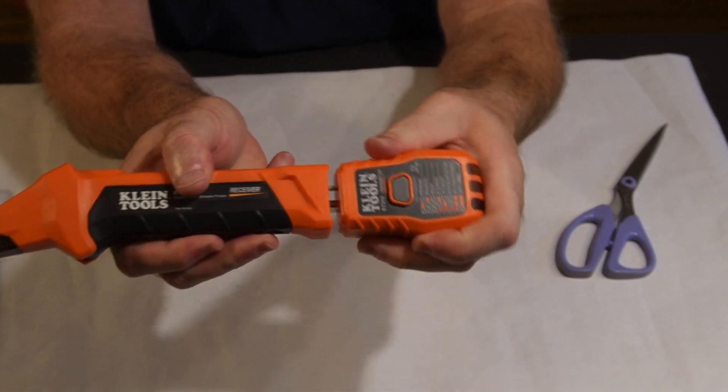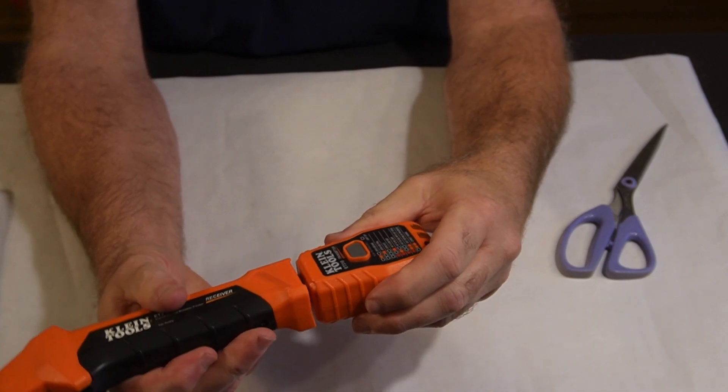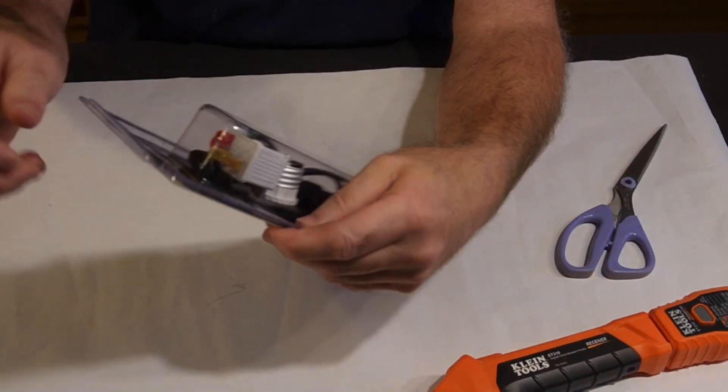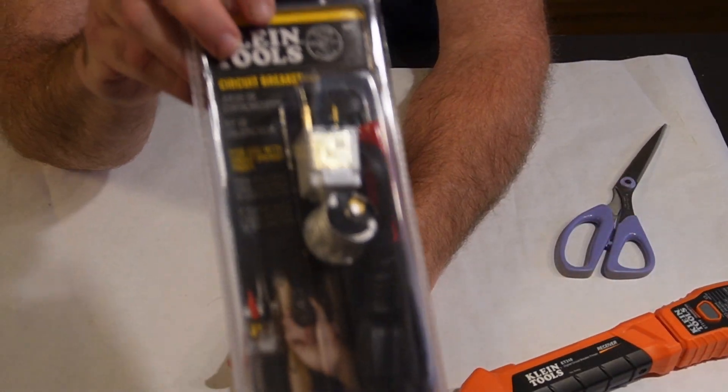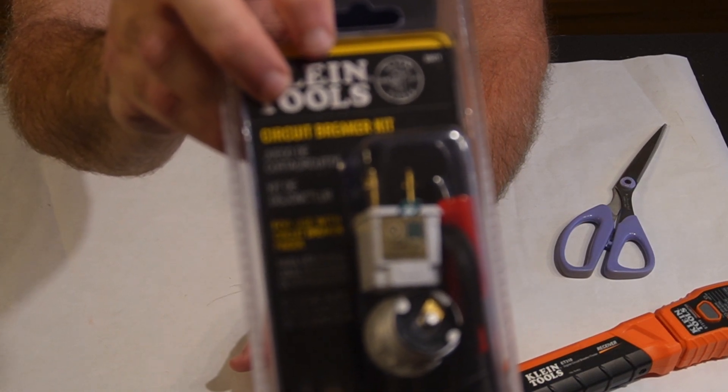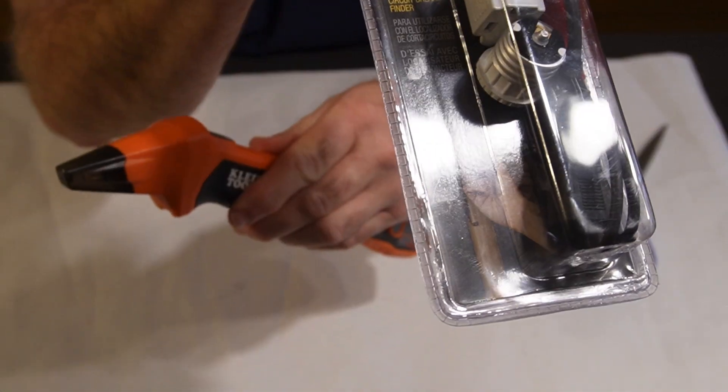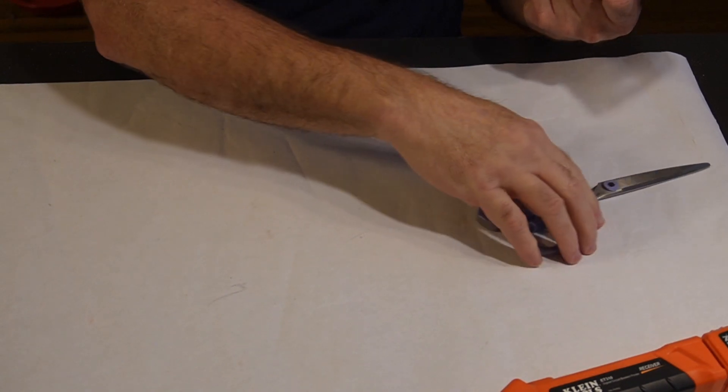The only problem with this is if the circuit doesn't have an outlet on it, you can't use this to find it. So Klein has a kit that you can purchase which has a few adapters in it to allow the device to be used for any circuit. So let's open this up.